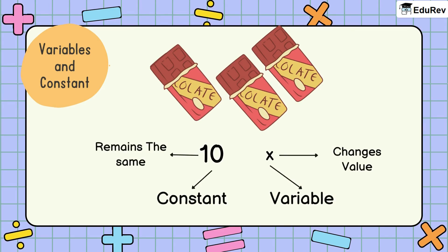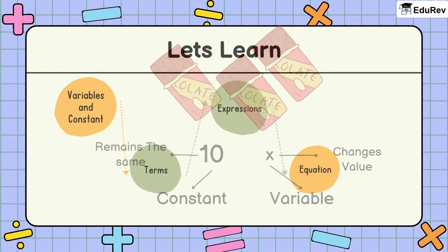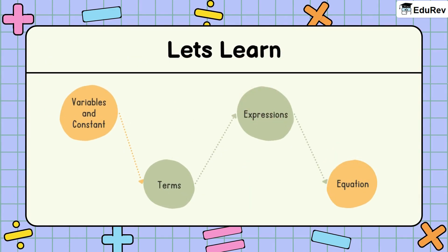Here, X is a variable, which means it can take any value depending upon how many chocolates you wish to buy. And 10 is a constant, which means that it does not change its value. So remember this: a variable changes its value but a constant never changes its value.